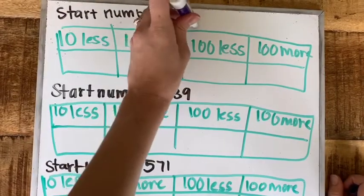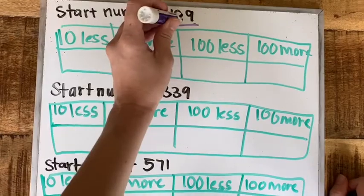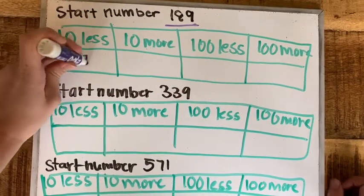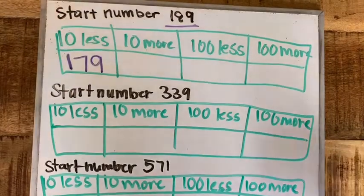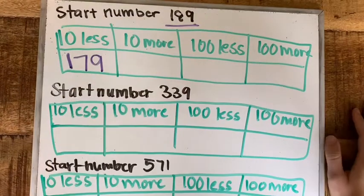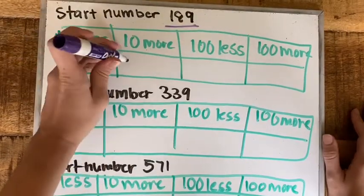So for our first one, 189 is our start number. Remember we come back to this number every time. So ten less than that, we'll look at our tens place, we have an eight, so ten, take away one group of ten, we'll have seven tens and our hundreds and ones don't change. So in our next one, ten more, ten more than 80 is 90, so 199.